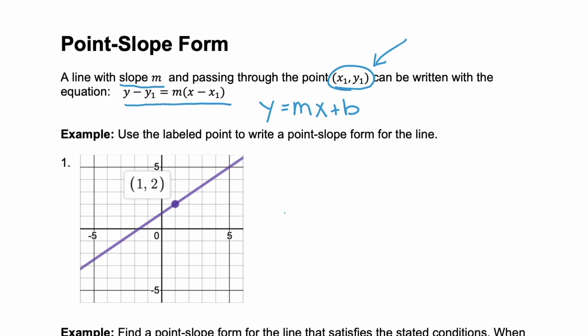Let's look at an example. We're asked to use the labeled point to write a point-slope form for the line. The point given is (1, 2), where 1 is our x1 and 2 is our y1. So we start with y minus y1 equals m times x minus x1, substitute those in to get y minus 2 equals m times x minus 1.